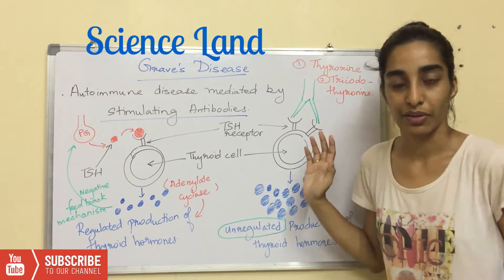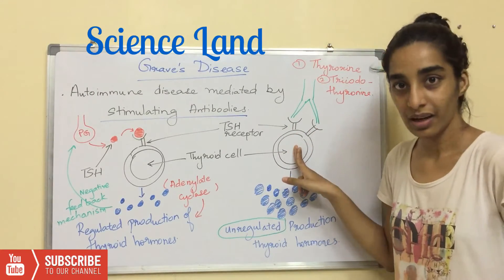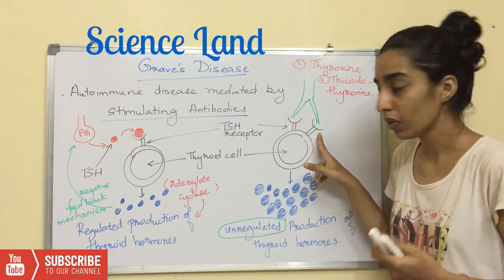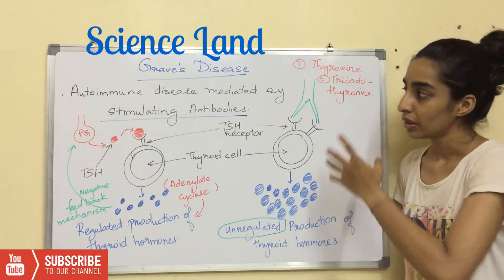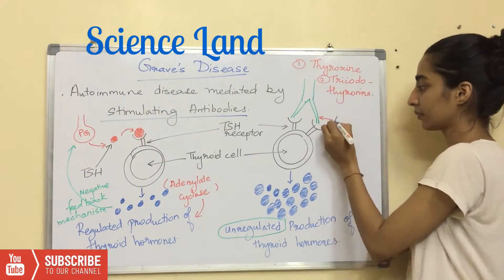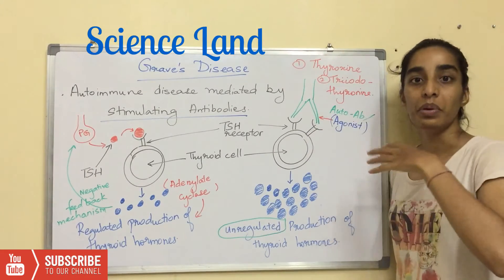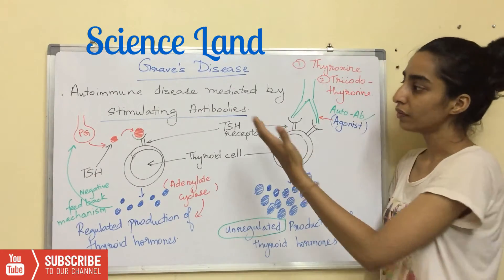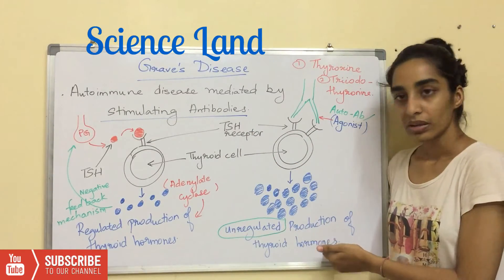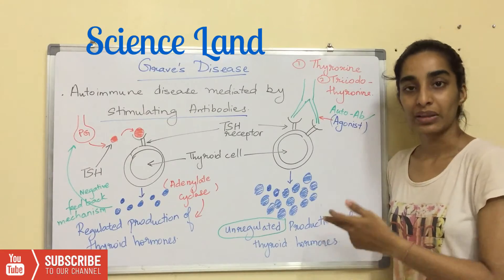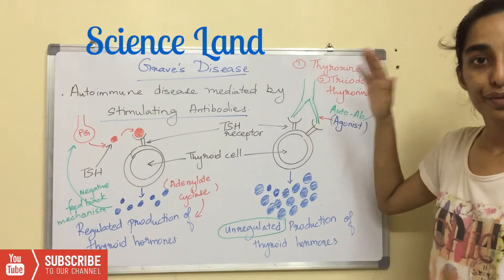If the person is suffering from Graves disease, we have a thyroid cell with thyroid stimulating receptors also. But those autoantibodies are like agonists — they will mimic the function of thyroid stimulating hormone. They will also produce thyroid hormones. But the only difference is, in this case, there is no negative feedback.